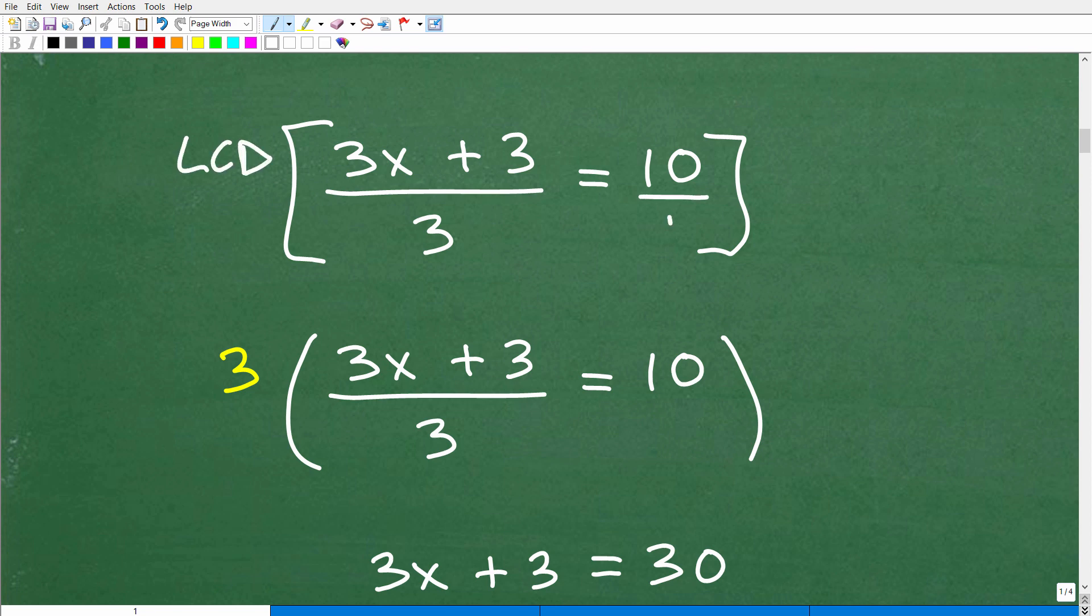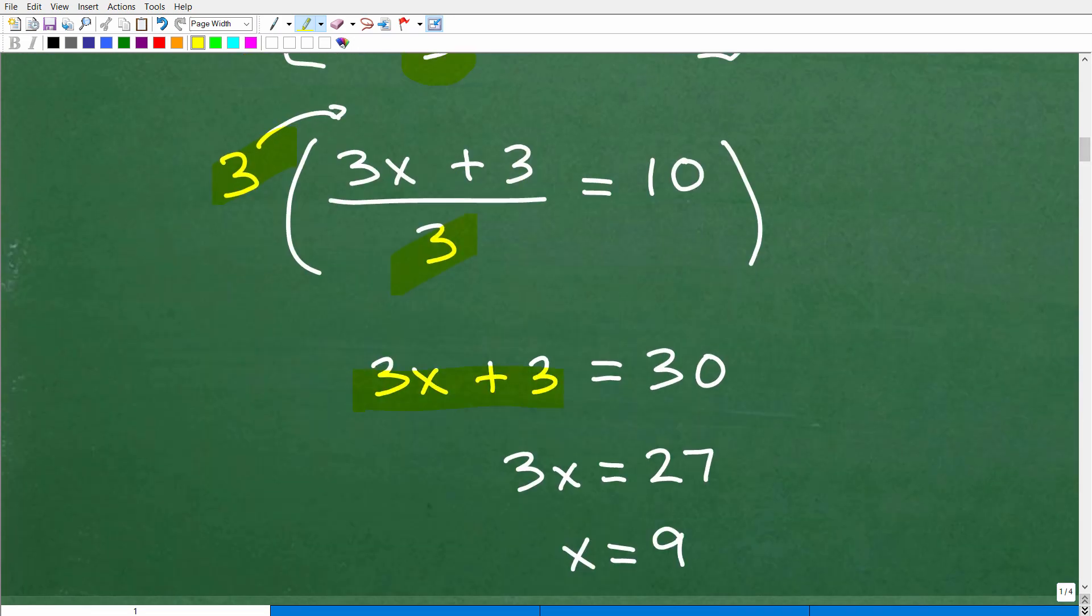But what I'm going to choose to do here is like, I've got a fraction. I got this 3 down in denominator. Let's just get rid of the fraction. Anytime you have an equation with a fraction, as long as you multiply the entire equation by the LCD. And what's the lowest common denominator here, it's 3. We can clear the fraction. So that's what we're going to do here.